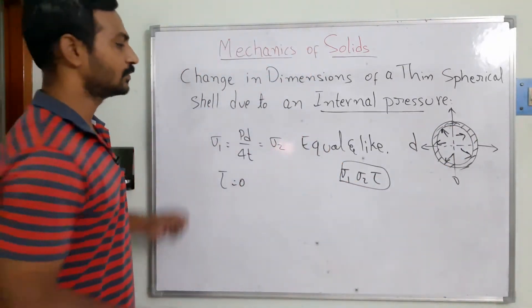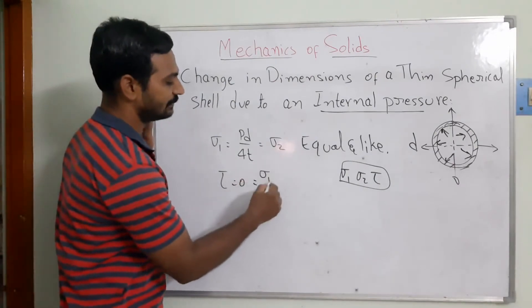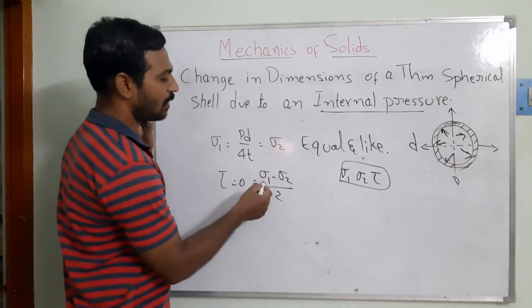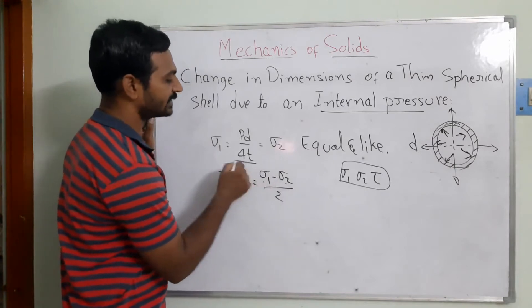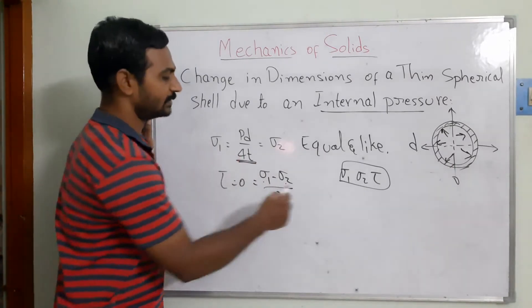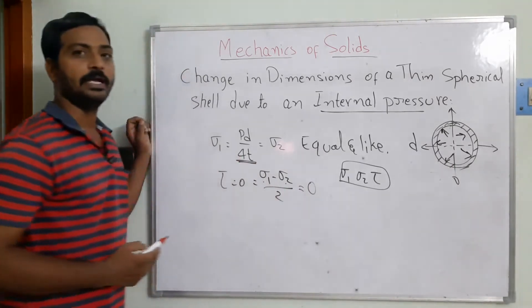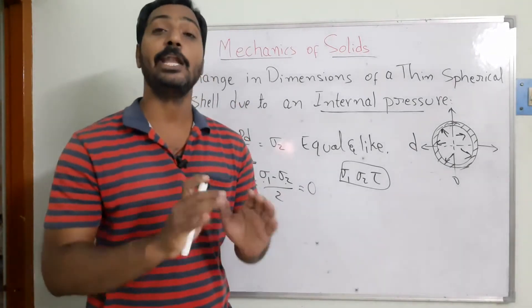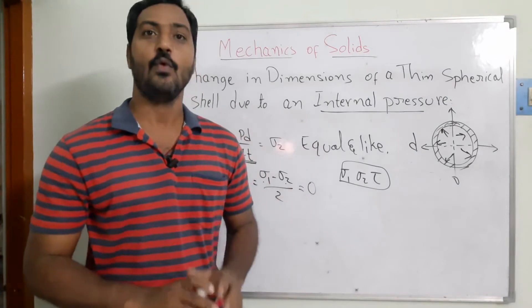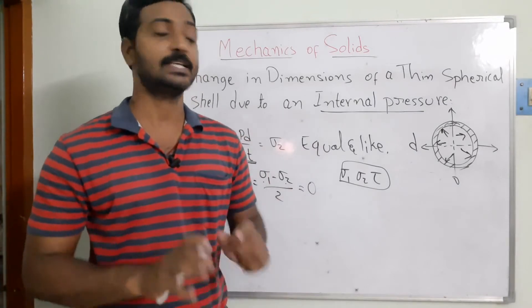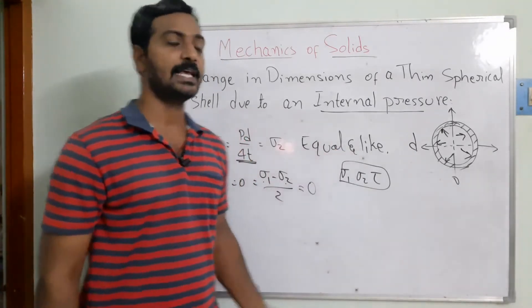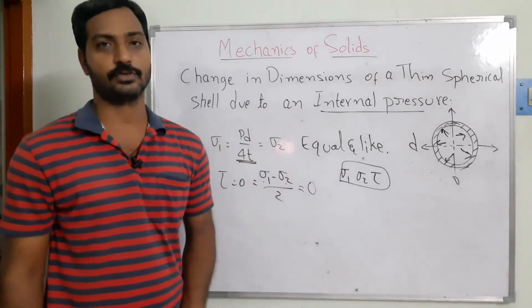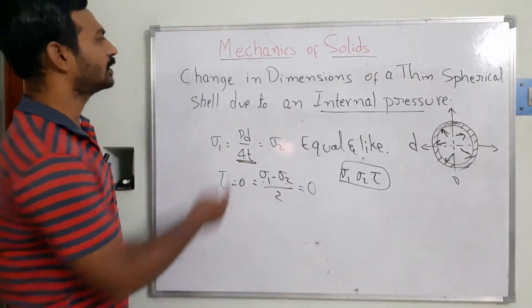The equation for shear stress is tau = (Sigma 1 - Sigma 2)/2. Since Sigma 1 and Sigma 2 have the same magnitude, this equals zero. It means thin spherical shells are not subjected to any shear stresses — only equal and like forces act, where circumferential stress equals longitudinal stress.